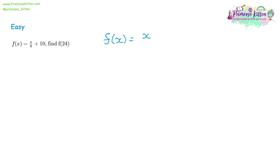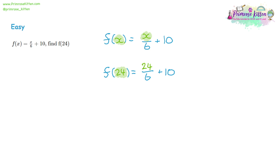Moving on to question 2. The function of x is equal to x divided by 6 and then add 10, and we've been asked to find the function of 24. All we are doing is swapping the x's with 24. So we find where x is, write in 24 instead, and write the rest as it was — divide by 6 and plus 10. So 24 divided by 6 is 4, and we're adding on 10. 4 plus 10 is 14.